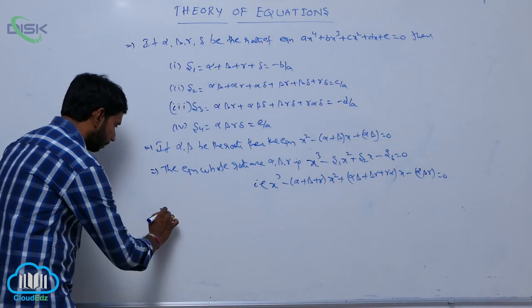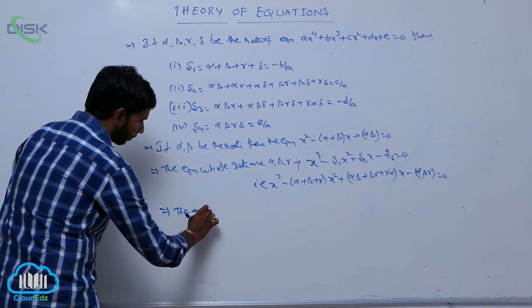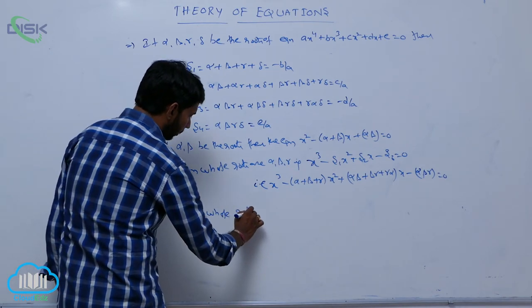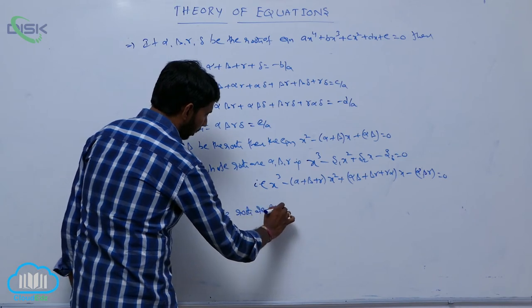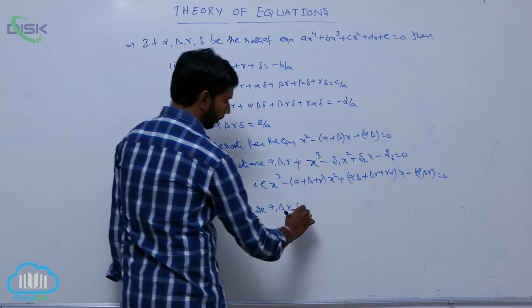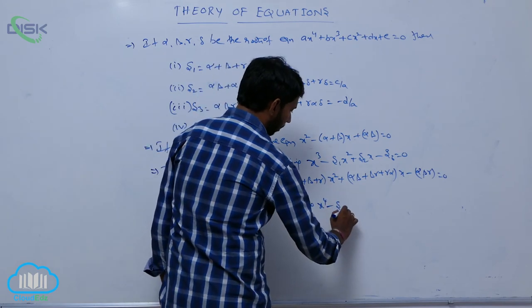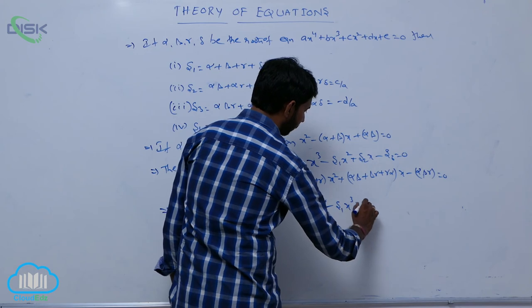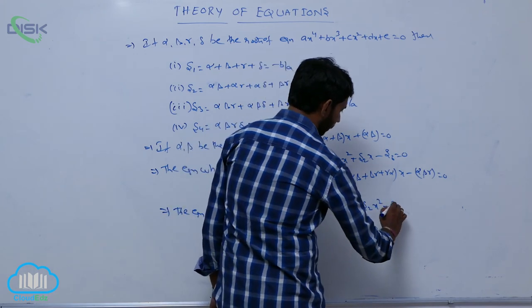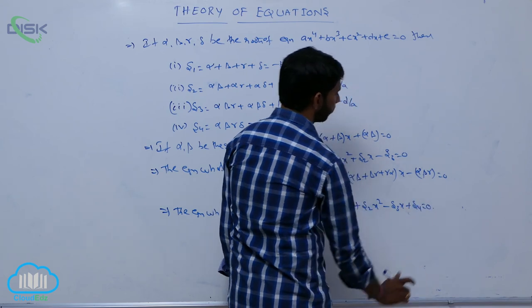The equation whose roots are alpha, beta, gamma and delta is x⁴ minus S1·x³ + S2·x² minus S3·x + S4 = 0.